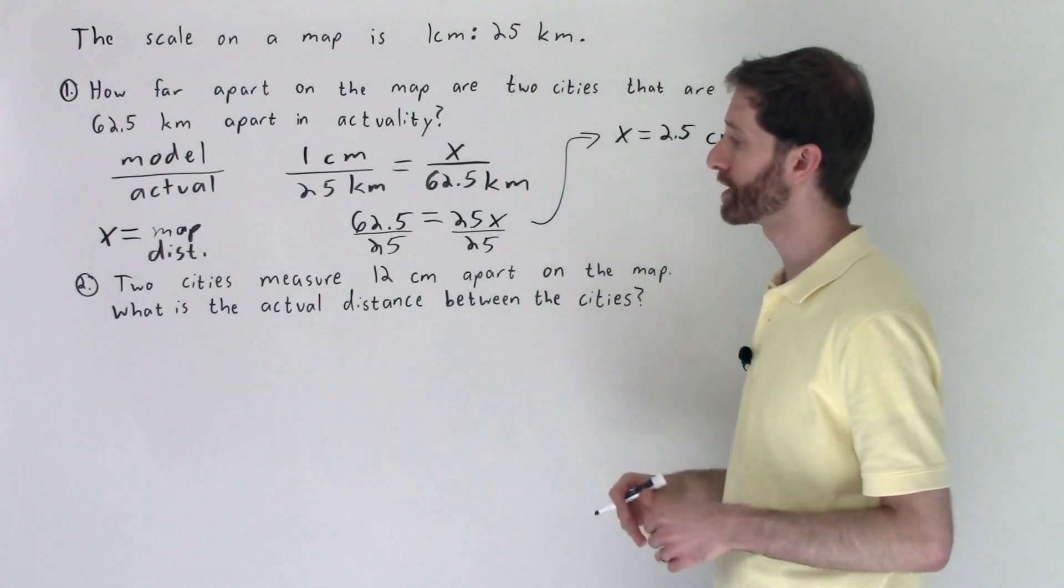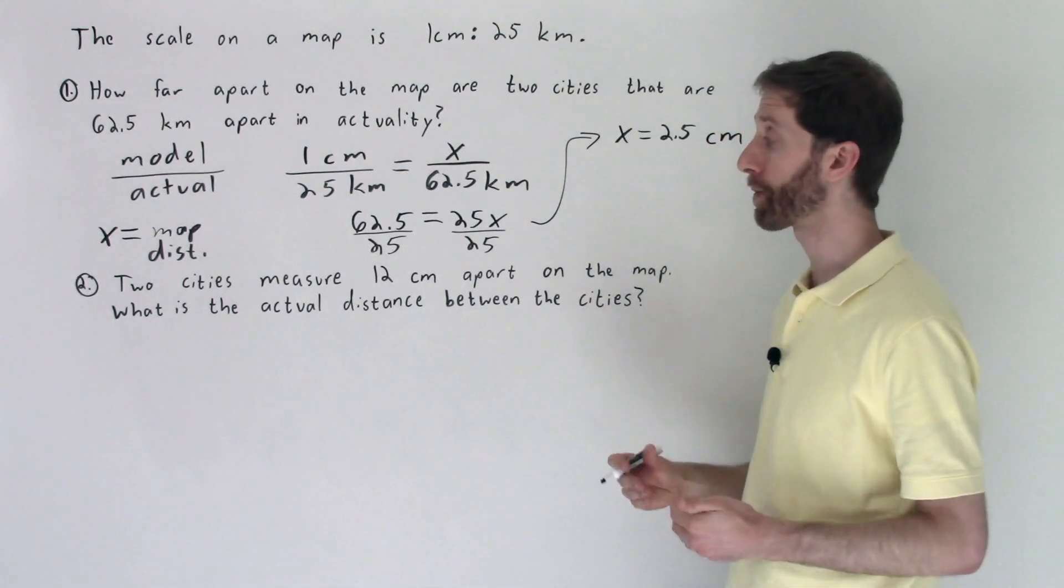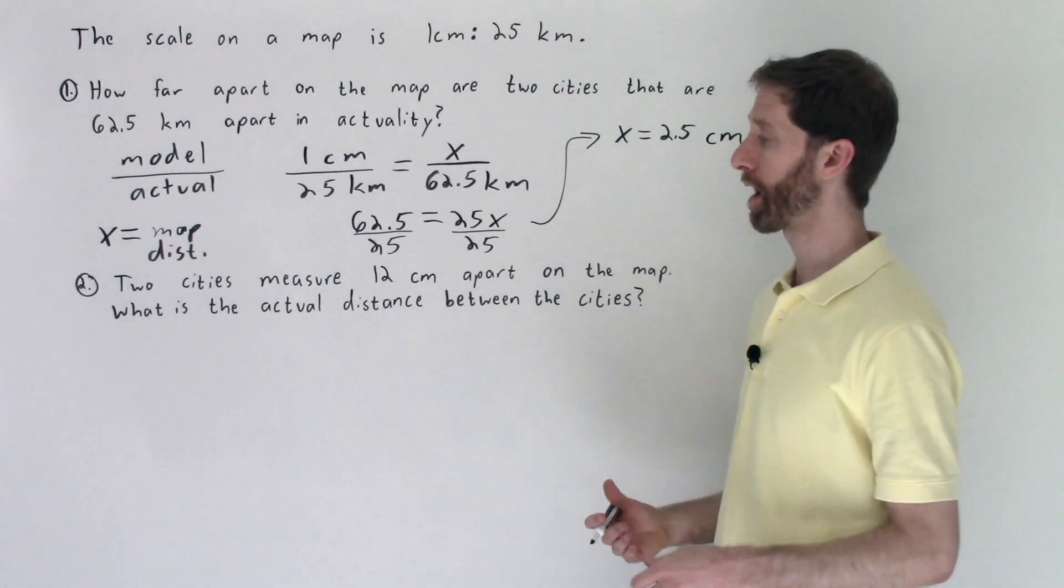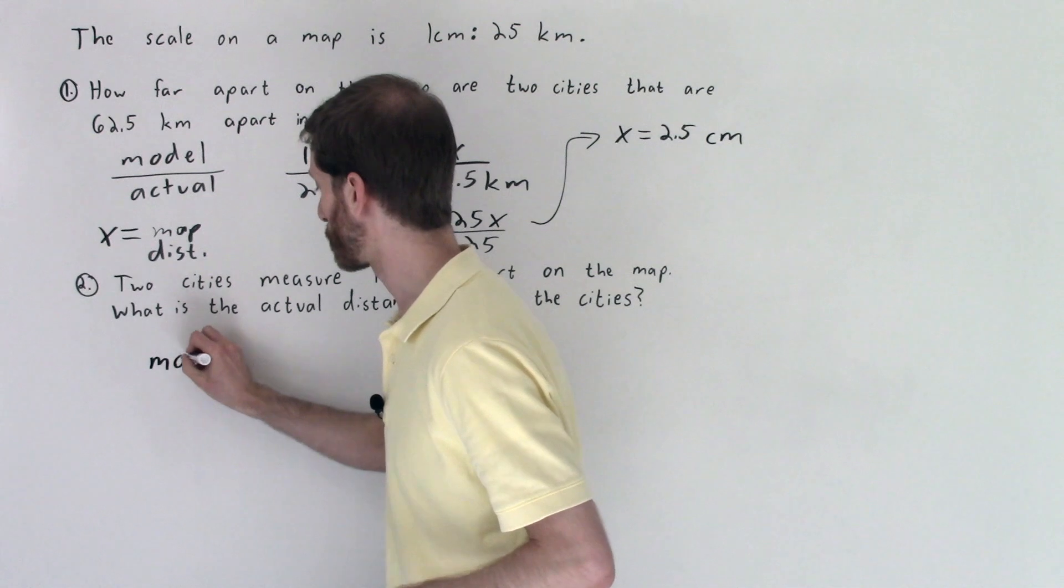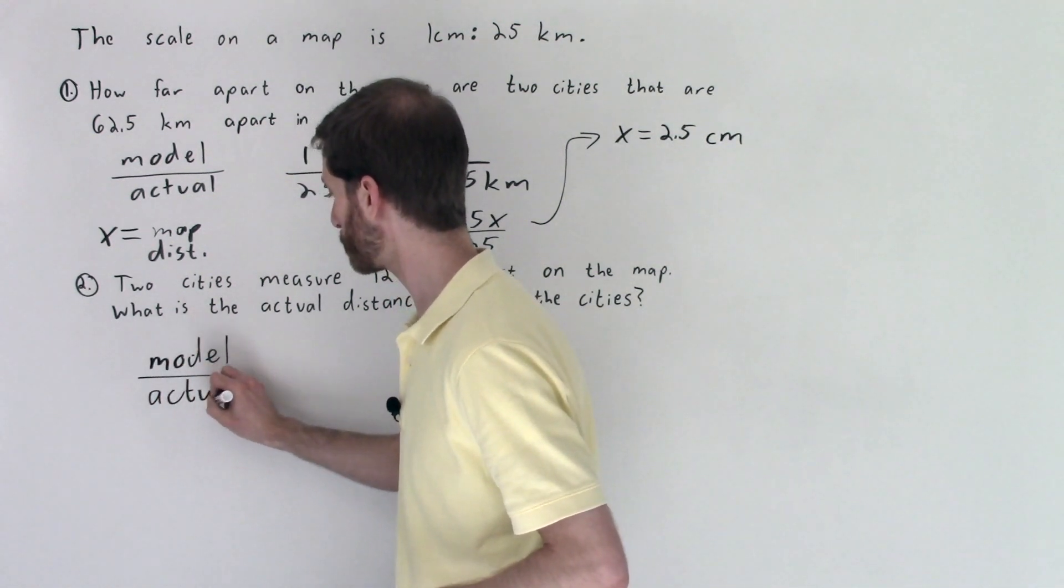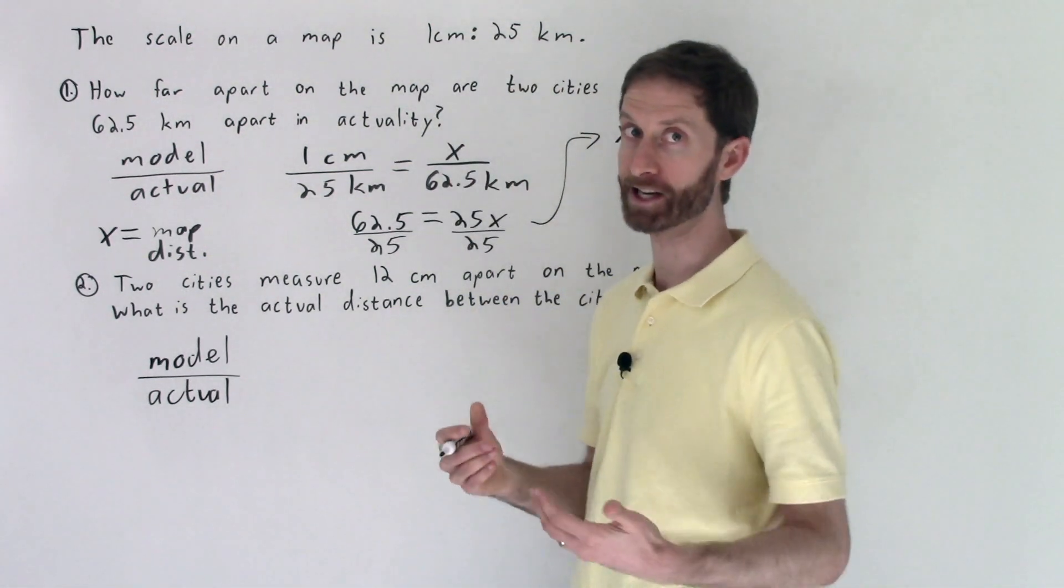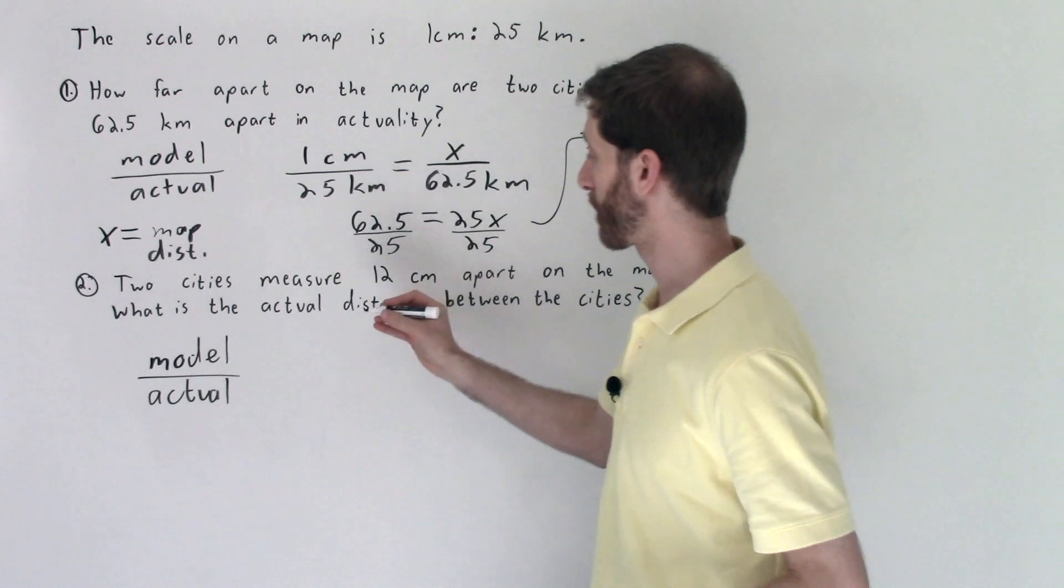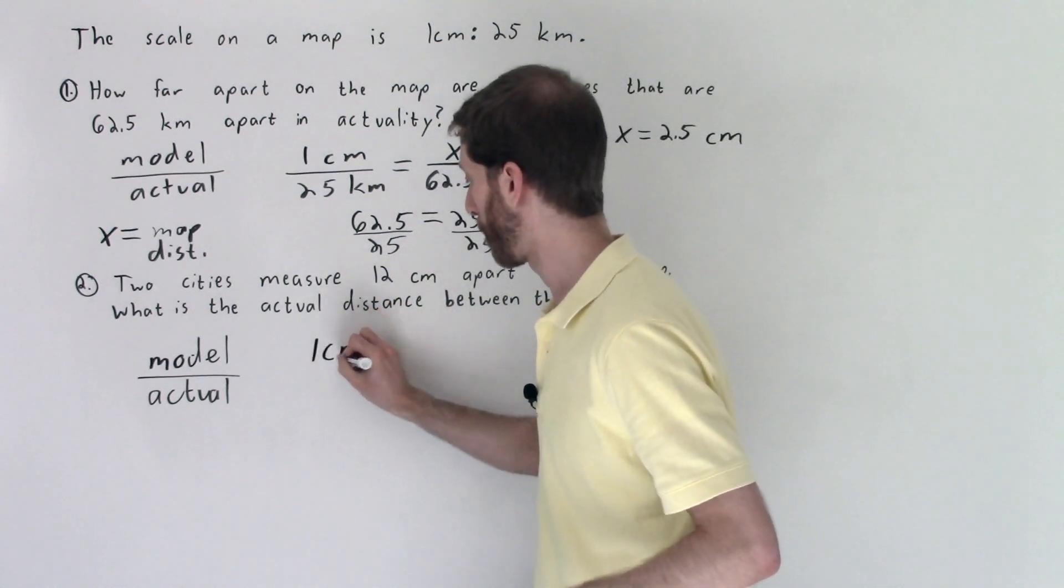It's all about setting up that proportion again with corresponding parts, model to actual, using the scale. This problem tells us two cities measure 12 centimeters apart on the map. What is the actual distance between the cities? So now we're flipping this around.